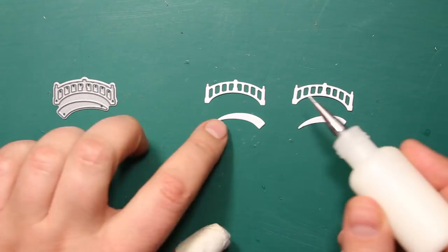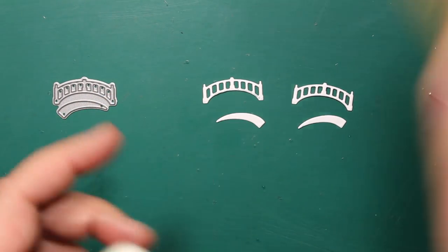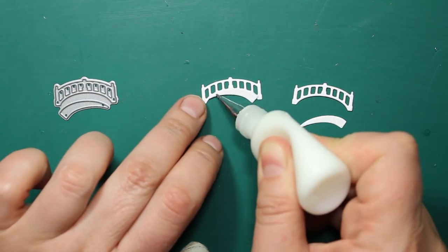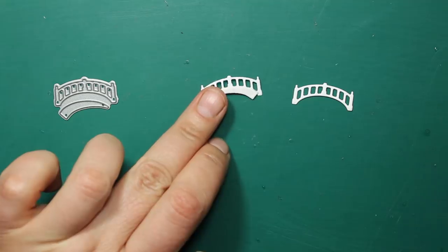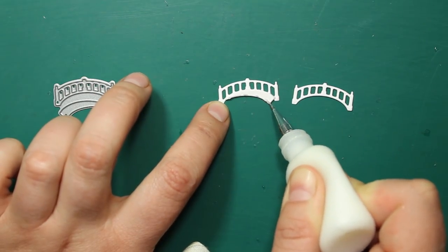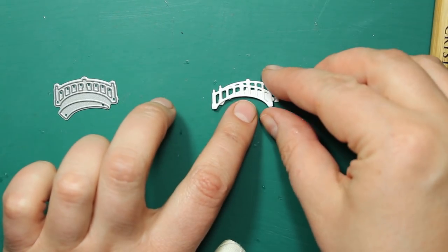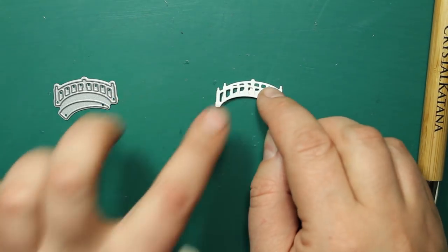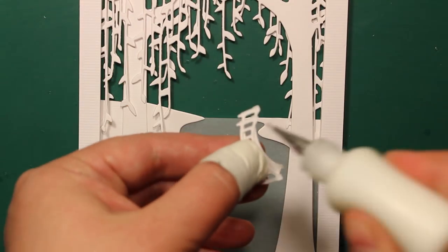This super cute tiny die is called Little Bridge, it's also by Memory Box. I had to die cut it twice and this is how I assemble it. I'm using a needle applicator bottle filled with a Ranger multi-medium mat and I'm also using Crystal Katana pickup tool for precision placement of my die cuts. These tools really make the work with the small pieces much much easier. Then I can attach the bridge to the banks of my pond.